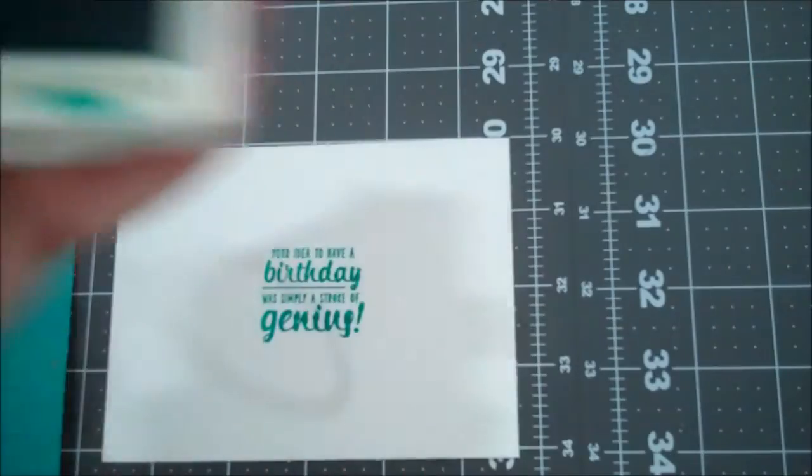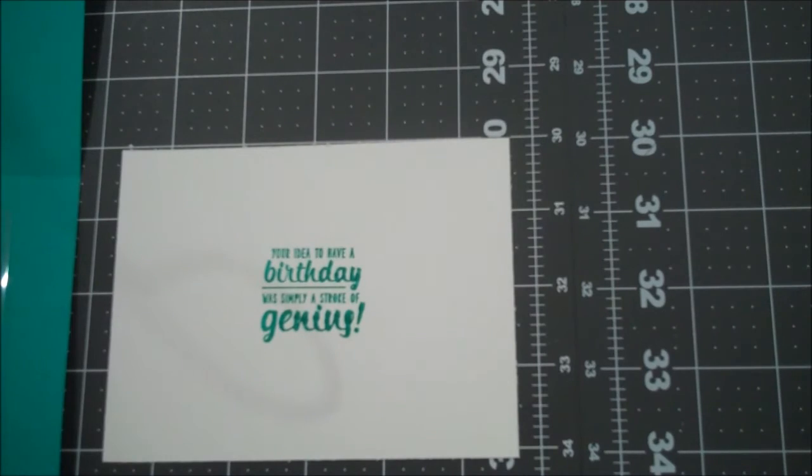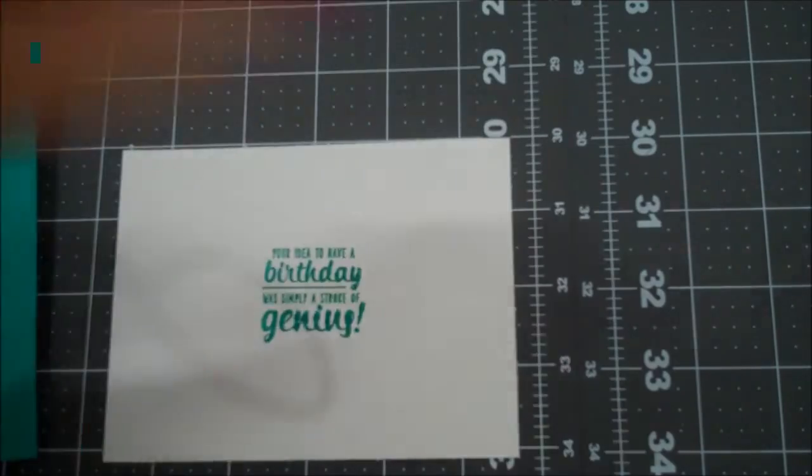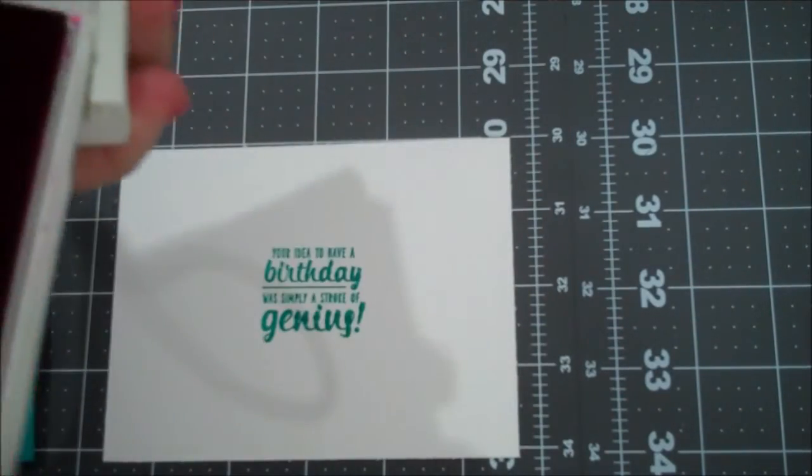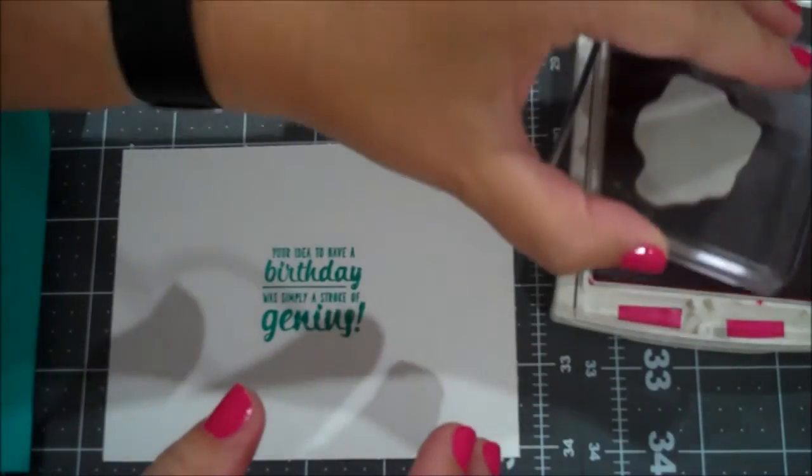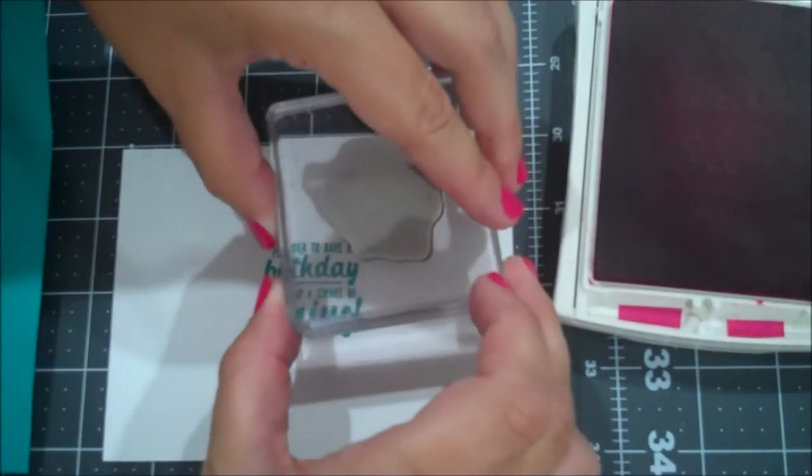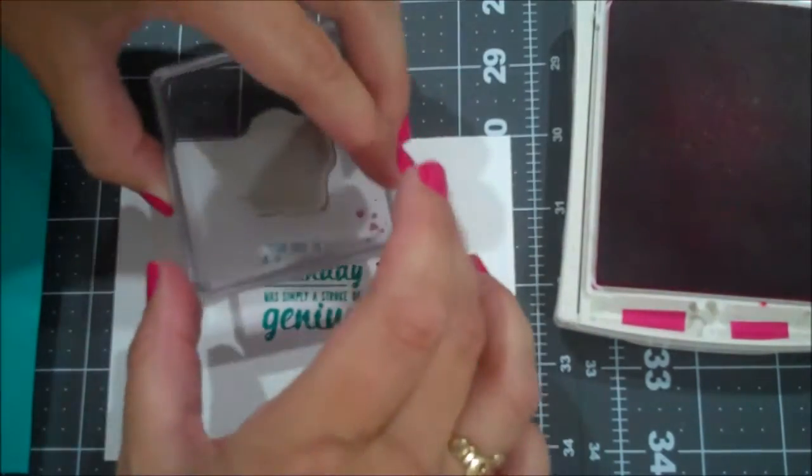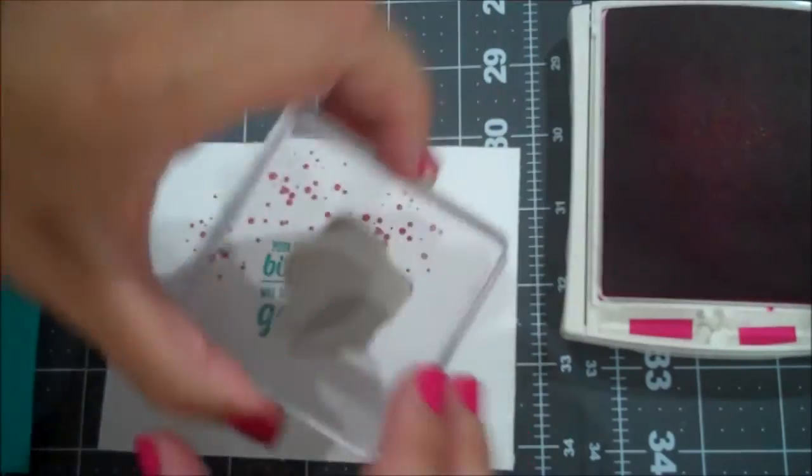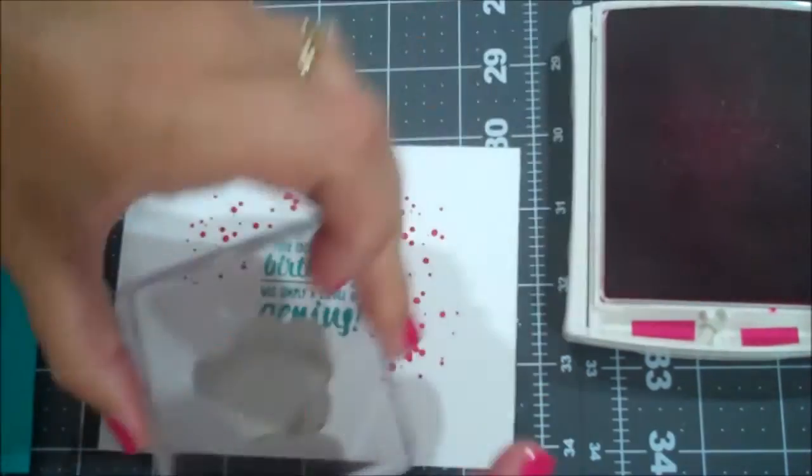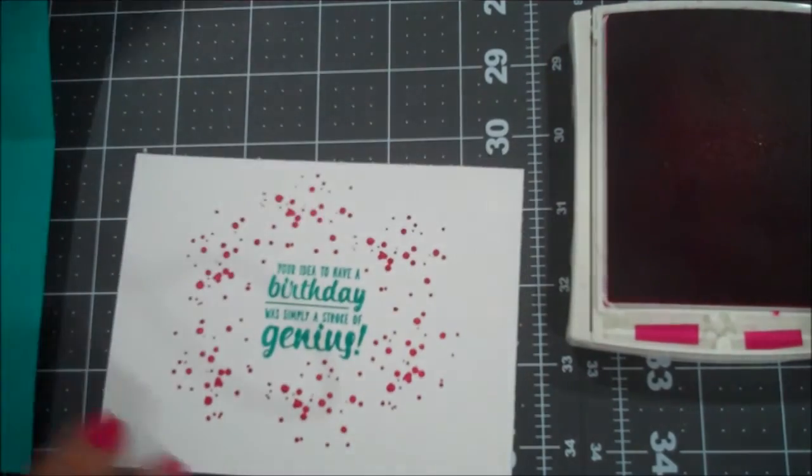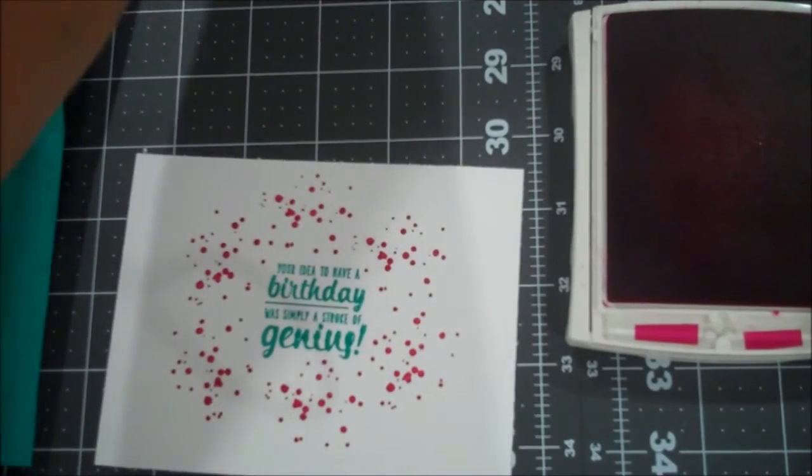And then what I chose to do to just make it a little bit more fun and give it a little bit more color is I'm going to use the splatter here with a little melon mambo. And I am just going to do this around my sentiment. Just to add some more color through the window. So some of this is not going to show and that's fine. Don't have to worry about it. Just that little bit will help.